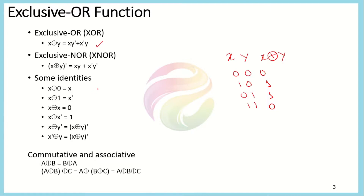There are some identities related to the exclusive OR operation that we will be utilizing in the current and future lectures. If we exclusive OR any variable with zero, it returns the same variable. If we exclusive OR any variable with one, it produces the complement of that variable. If two identical variables are exclusive OR'd, the result is always zero. If a variable is exclusive OR'd with its complement, the result is one. These identities can be proved through the truth table method.